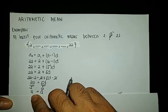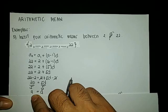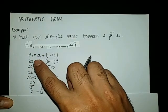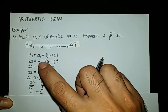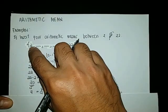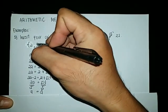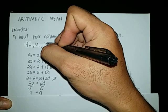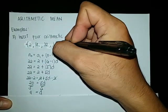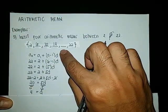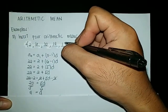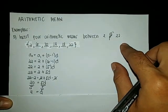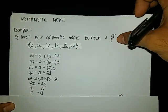Now let us insert the arithmetic means. We add 4 to each term: 2 plus 4 is 6, then 6 plus 4 is 10, 10 plus 4 is 14, 14 plus 4 is 18, and 18 plus 4 is 22. So our arithmetic sequence is 2, 6, 10, 14, 18, 22. That is our first example.